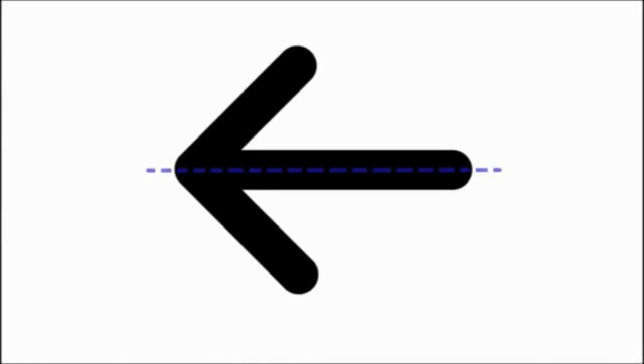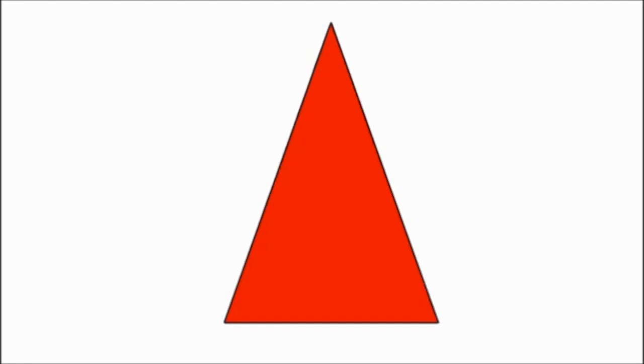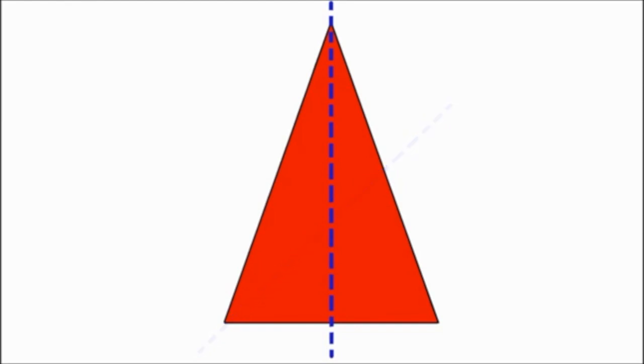Some symmetrical objects only have one line of symmetry, while others have more. For example, this triangle only has one line of symmetry straight down the middle, because if you try to divide it any other way, the pieces don't match up.